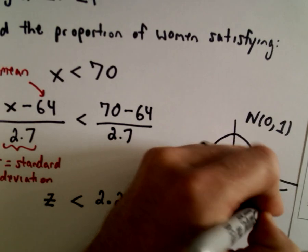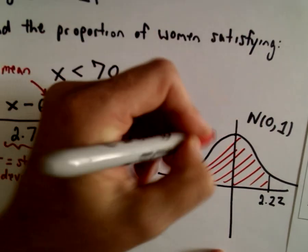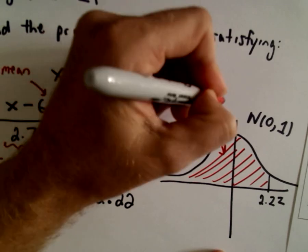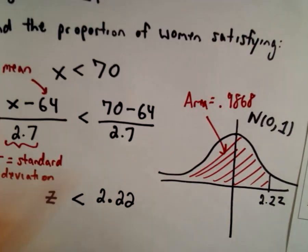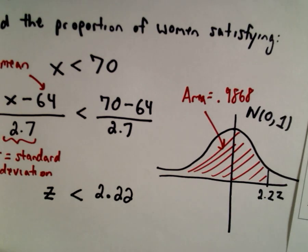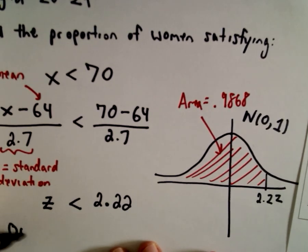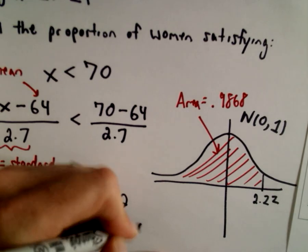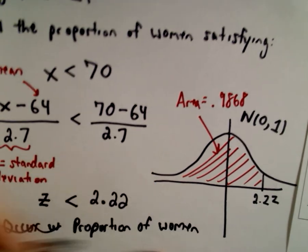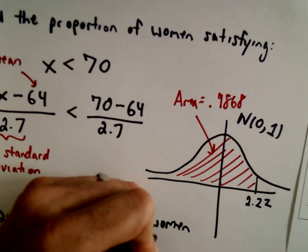So here's my z-value of 2.22. If I look to the left of that, if I look at the area underneath the curve, the area underneath that curve is going to equal 0.9868, and that tells us our corresponding probability. The area is the same thing as the probability. It says the probability that a female is less than 70 inches tall, or the proportion of women who are less than 70 inches, is going to equal 98.68%.